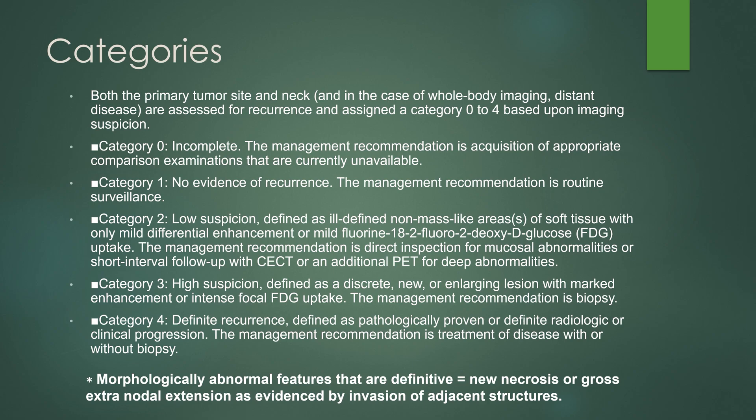Category 1 management is routine surveillance. Category 2 is low suspicion — this can be an ill-defined, non-mass-like area or areas of soft tissue with only mild differential enhancement or mild FDG uptake. The management recommendation for category 2 is direct inspection if possible, or short-interval follow-up with contrast-enhanced CT or additional PET for deeper abnormalities.